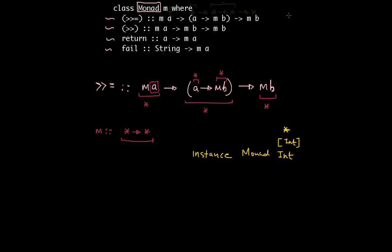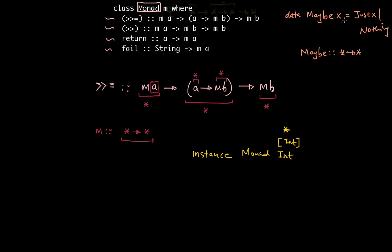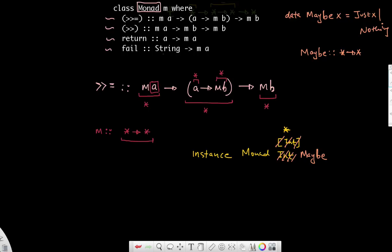What is one such type constructor that takes in a concrete type and gives you back another concrete type? Well, one of the simplest things would be the Maybe type. So if I quickly write the definition of Maybe - the type constructor Maybe is: Maybe of x equals Just of x or Nothing. I can easily see that the kind for Maybe is basically from star to star. It takes in a concrete type and produces back another concrete type. So going back, I can put in anything that has a kind from star to star, and that could be Maybe.